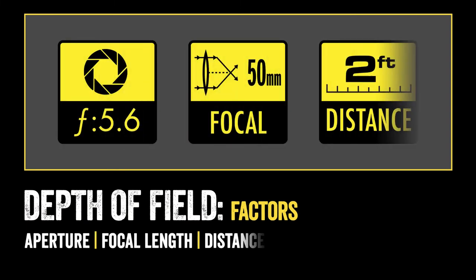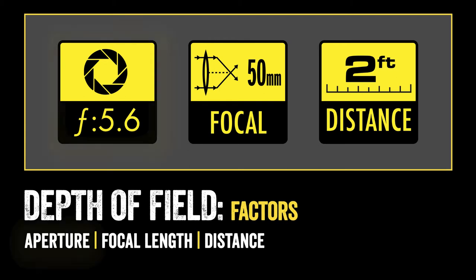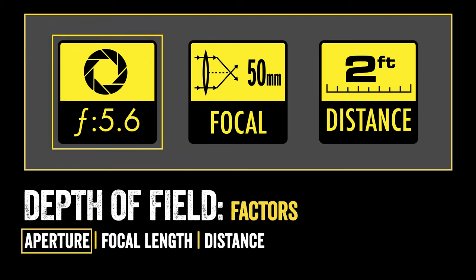When we talk about depth of field, there are three main factors that influence it. The first is aperture. We've learned about aperture when we talked about exposure in Camera Basics. That's the iris — the opening in the lens that lets in the amount of light. As you change the aperture, you change the way the light is focused onto the sensor in your camera, and that change impacts the depth of field.